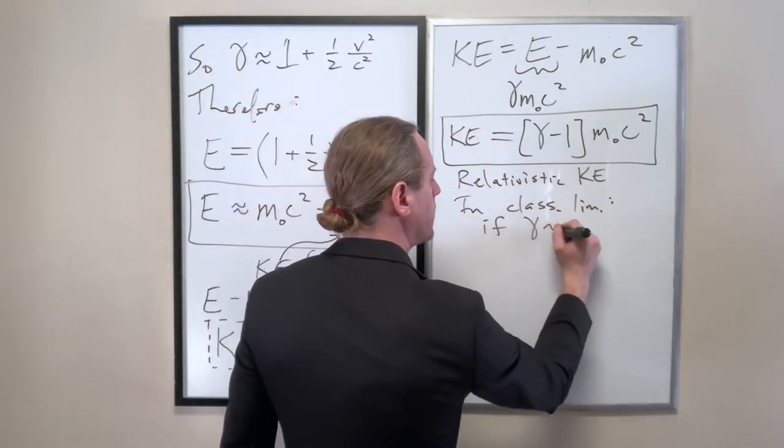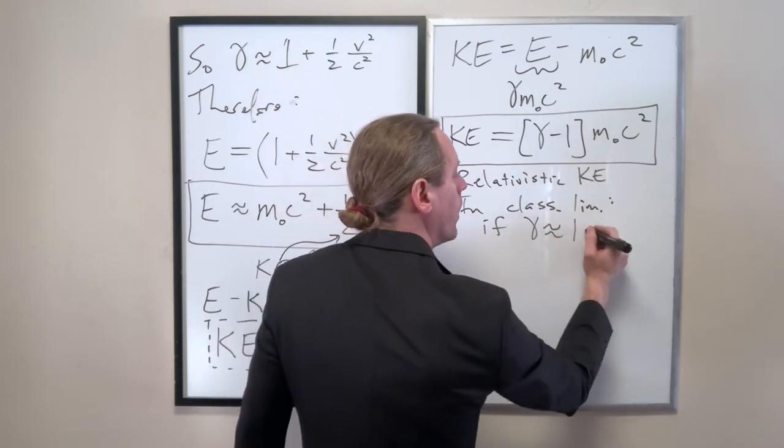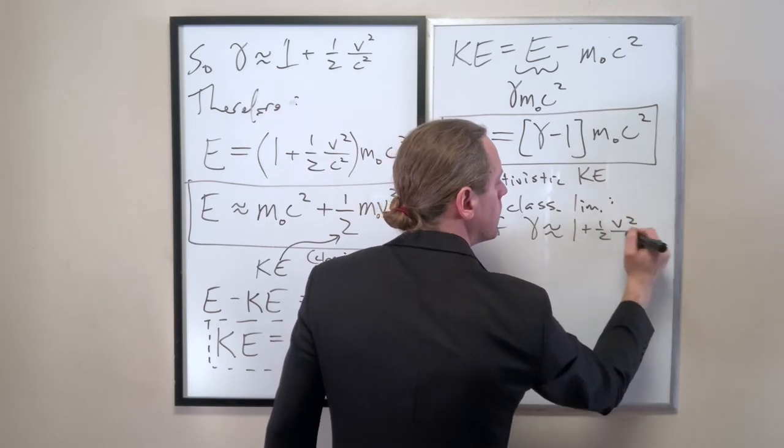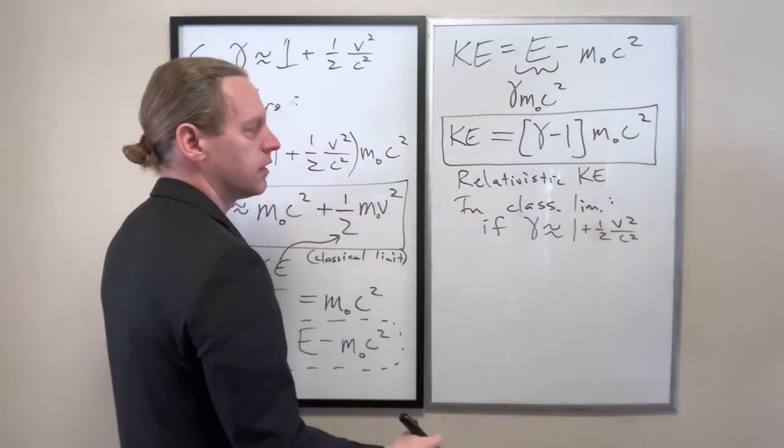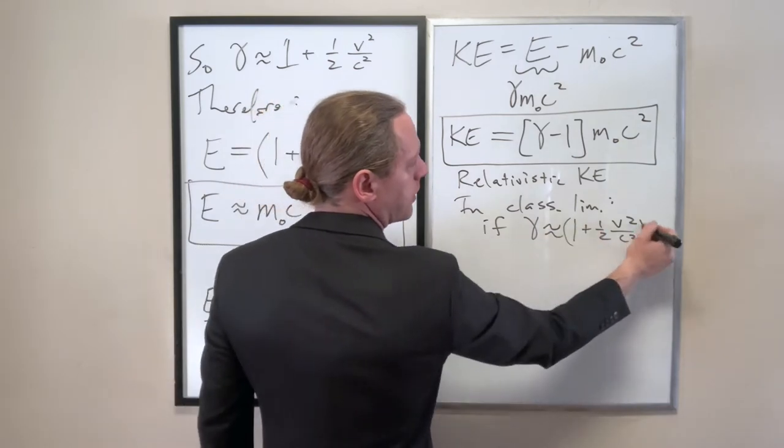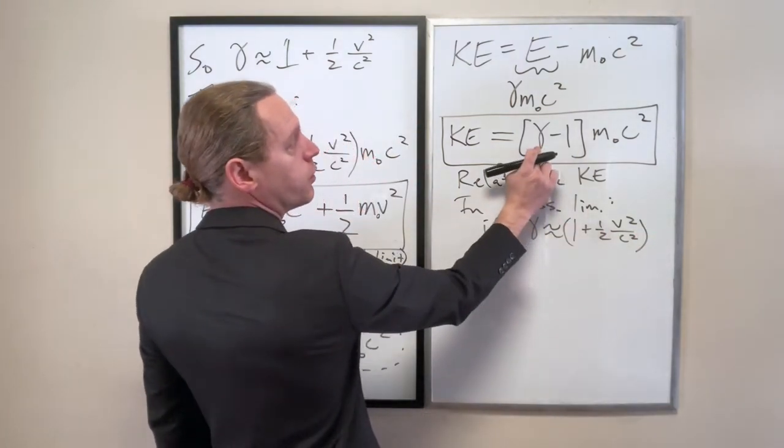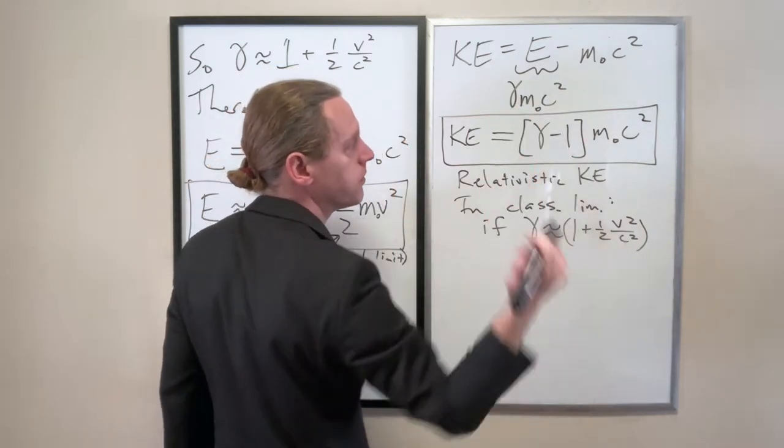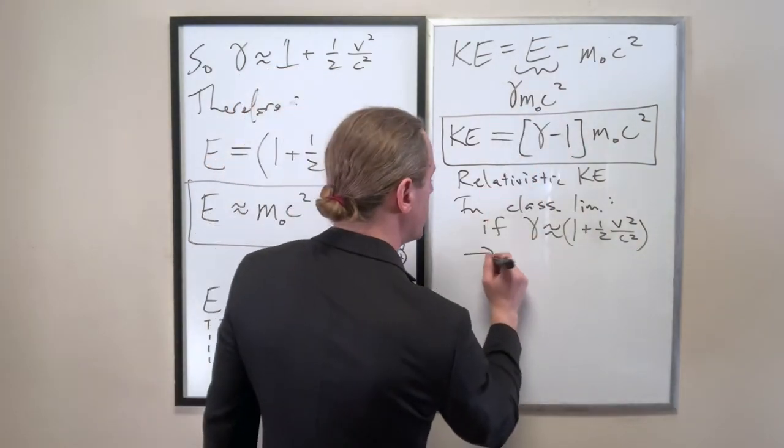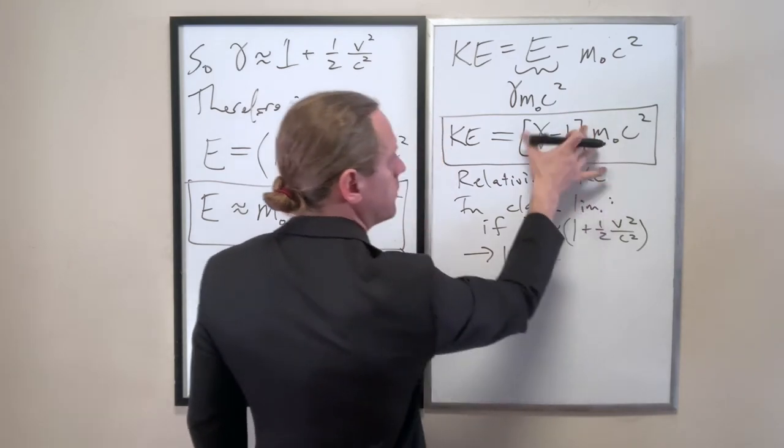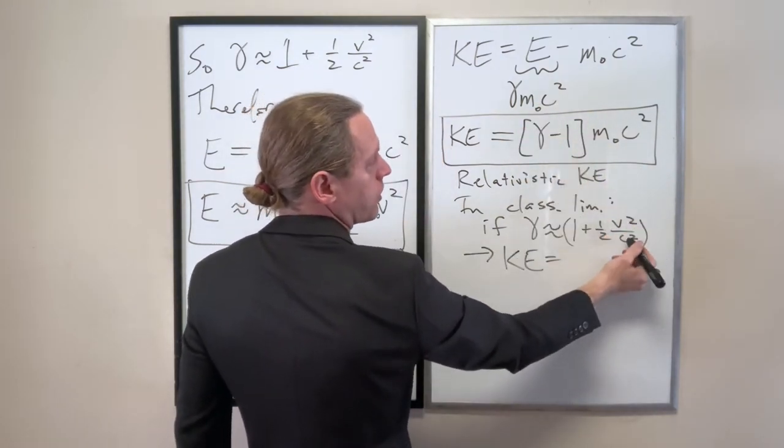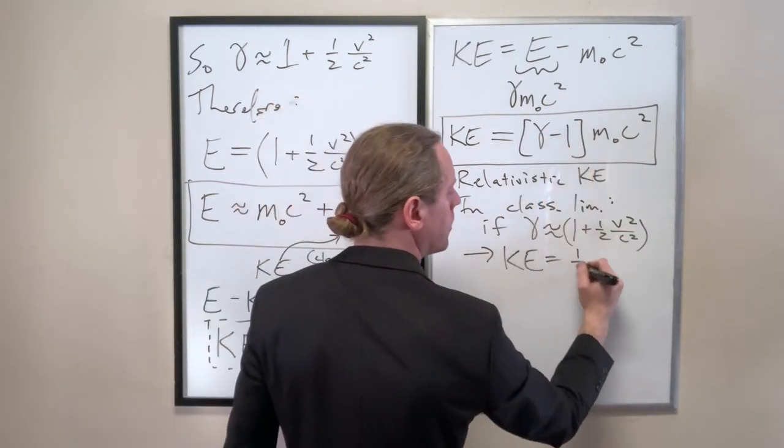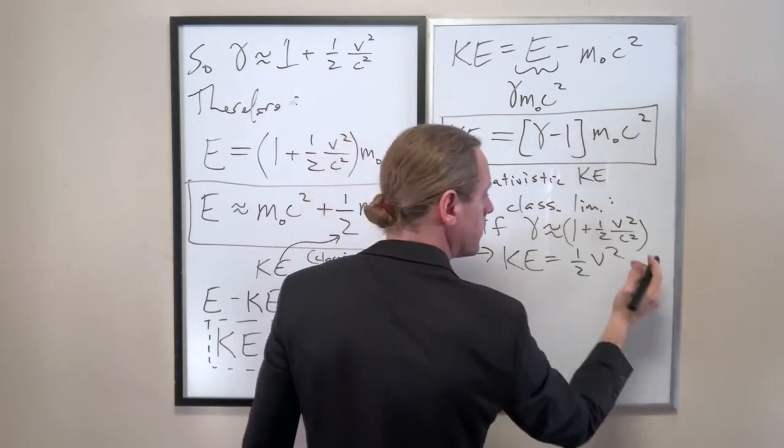If gamma can be approximated by 1 minus, sorry, 1 plus 1 half beta squared. Then if you plug this into that, we have 1 plus 1 half that thing squared minus 1. Now so we get out KE equals, this is just a half V squared over C squared. So a half V squared over C squared times C squared. That cancels M.